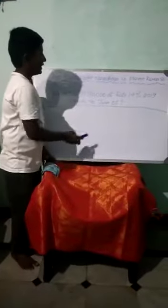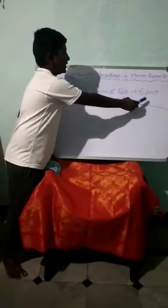Find SI on Rs. 30,000 at the rate 14% for the period 2019 January 12th to June 5th.